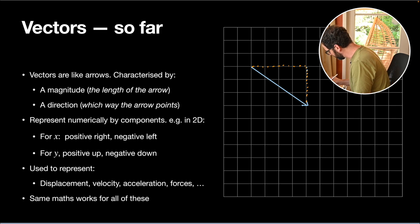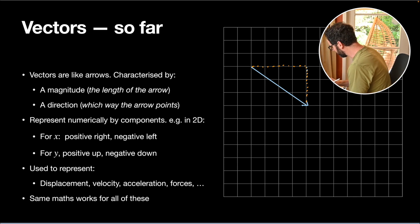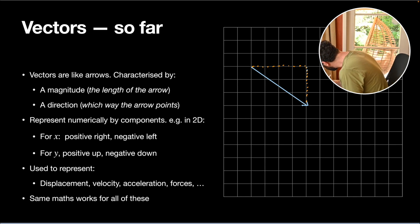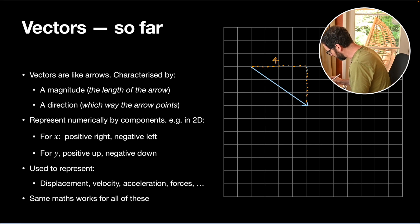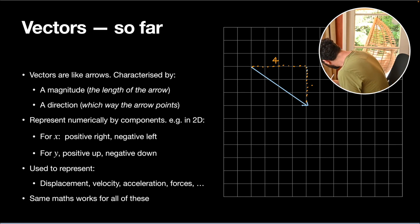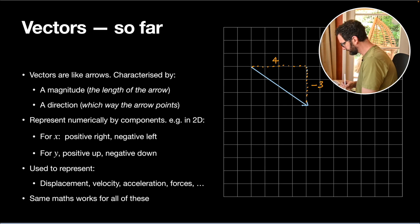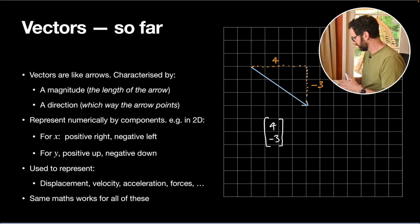For this vector, the horizontal component, or x, would be positive 4 because the arrow is going to the right. It would have an x component of 4, and a y component, or vertical component, of negative 3 because it's going downwards. So it would be negative 3, giving us the vector with components 4 and negative 3.